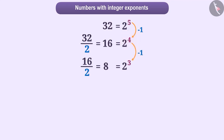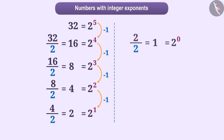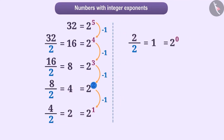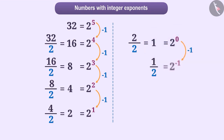Similarly, if we keep dividing the obtained numbers by 2, we will have to reduce the exponents by 1. This will give us a pattern. Now, if we divide 1 by 2, then again we have to subtract 1 from 0, which will result in minus 1. That is, 1 upon 2 is equal to 2 to the power minus 1.